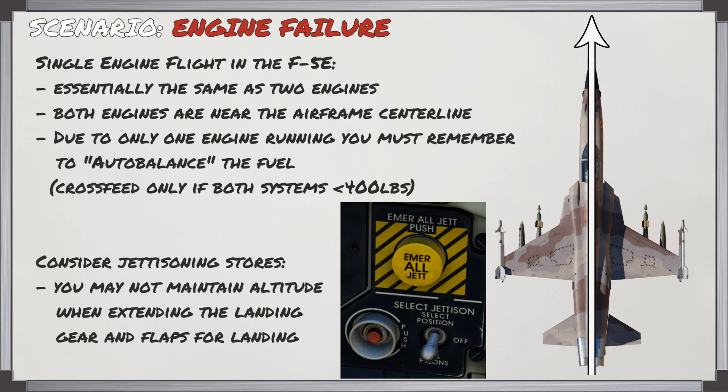Single engine flight in the F5 is going to be essentially the same as two engines. This is because both engines are near the airframe centerline, and because you only have one engine running, you need to remember to auto balance the fuel to continually draw fuel from the other side as needed. You can also consider jettisoning your stores because you may not be able to maintain your altitude when extending the landing gear and flaps for landing.